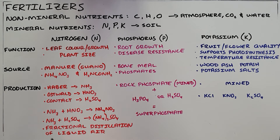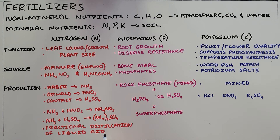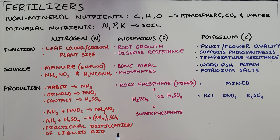Another source of nitrogen is fractional distillation of liquid air, where you cool the air down until it becomes liquid. Because nitrogen boils at a very low temperature of -196 degrees Celsius, it will boil first and you can therefore separate the nitrogen from the other air elements.